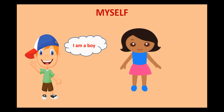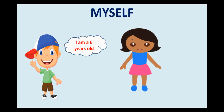Rahul says, I am a boy. Ritu is saying, I am a girl. So after telling their names, they further tell us that Rahul is a boy whereas Ritu is a girl. When we write about myself, we first give our name, then we write whether we are a girl or a boy. Rahul is saying he is six years old, and Ritu is saying she is seven years old.